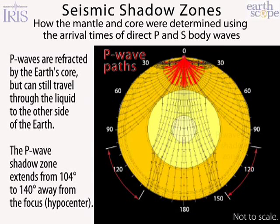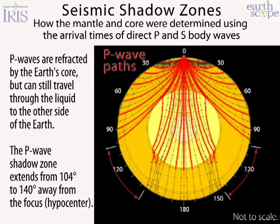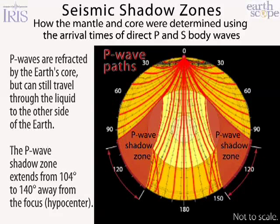An earthquake depicted here at the top of the globe for convenience sends compressional P waves in all directions, refracting along boundaries with depth and causing curving paths. At the core-mantle boundary they are refracted or bent inward and slow down in the liquid. It's this refraction that causes a shadow zone between the angular distances of 104 to 140 degrees from the earthquake.